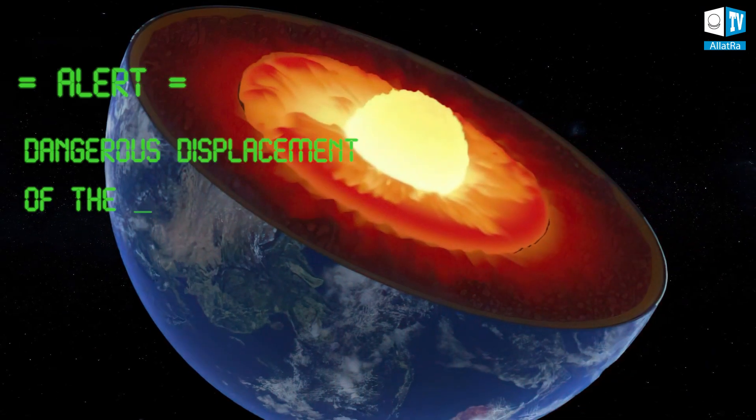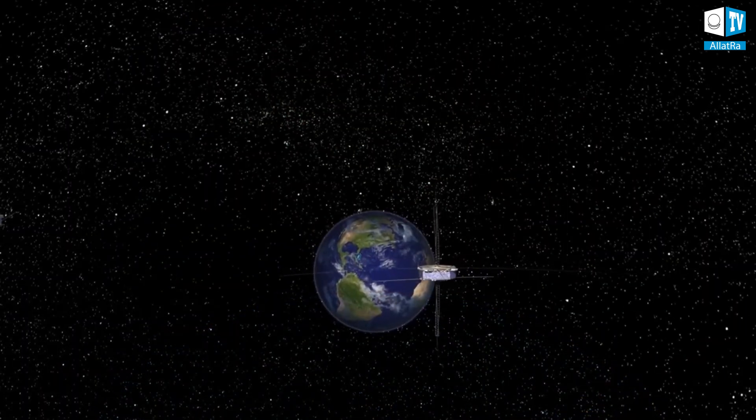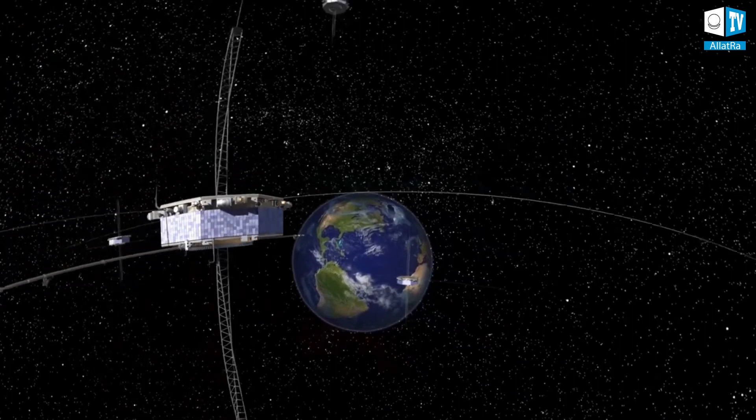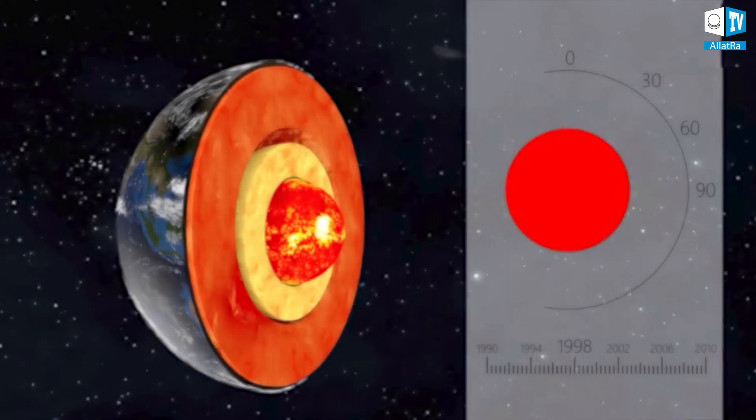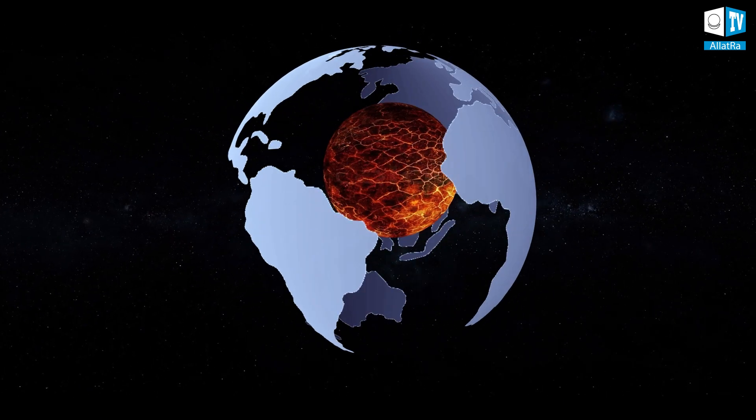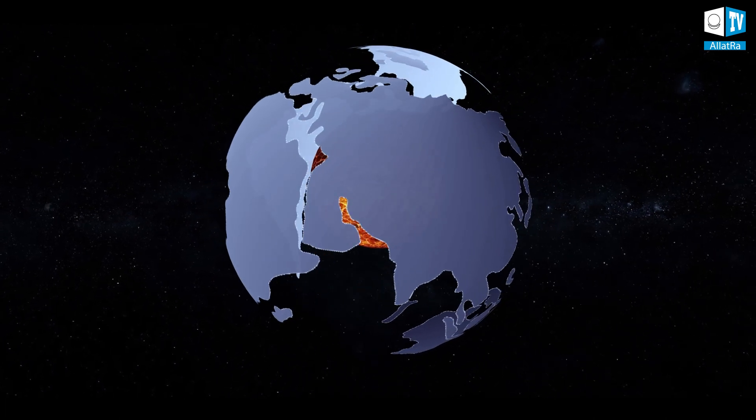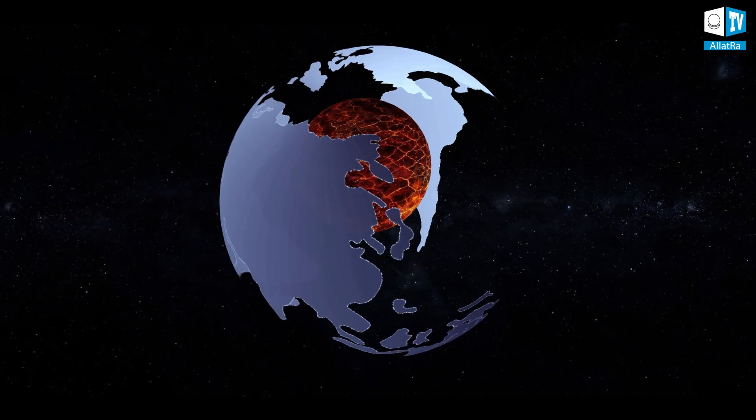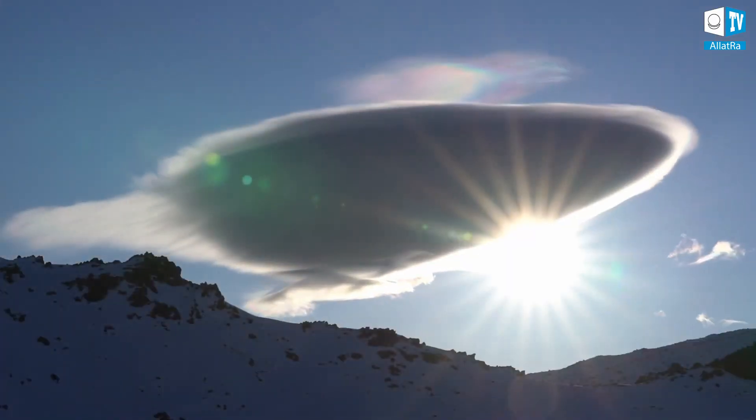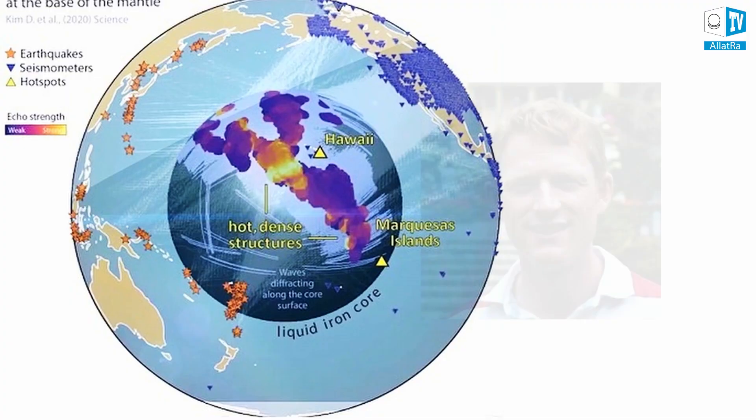Warning! Dangerous displacement of the core detected. Thanks to satellite observations of the Earth's center of mass, in 1998, scientists registered an abrupt bouncing of the core. As a result, the core abruptly changed the direction of its drift by 90 degrees and shifted northward toward the Tamer peninsula. According to scientists, this caused changes in the Earth's upper and lower layers. But changes in the Earth's core had been observed even earlier.